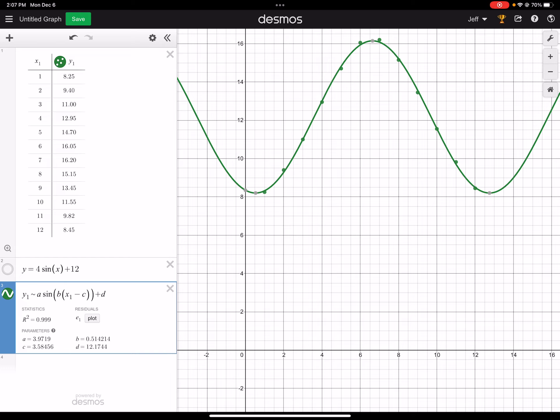I get the c value, so the phase shift is 3.6, 3.58, however you round it. And the vertical translation is 12.17-ish.